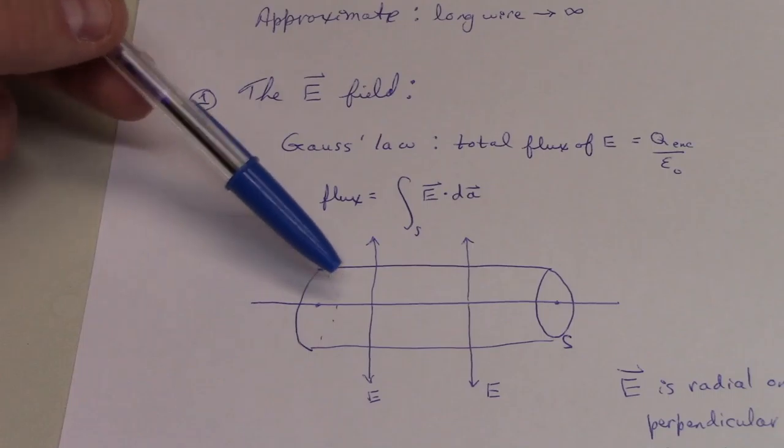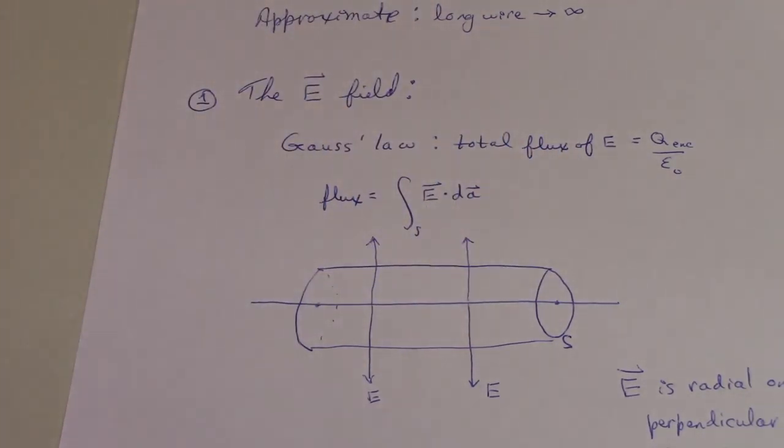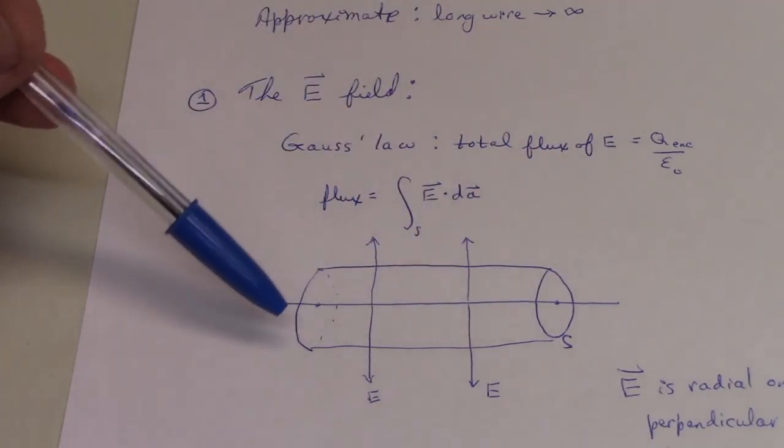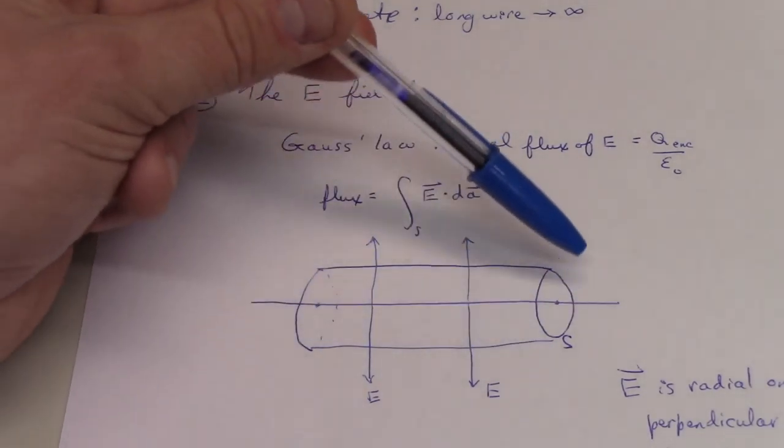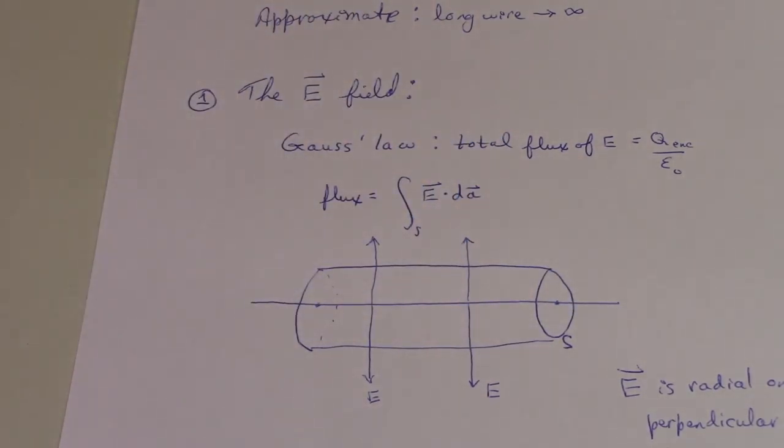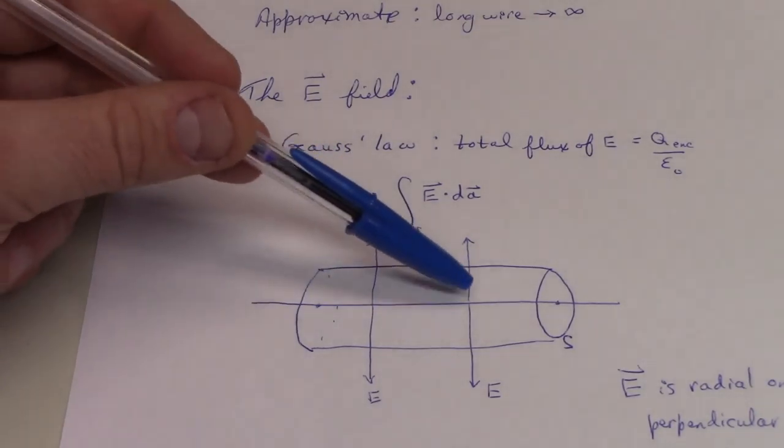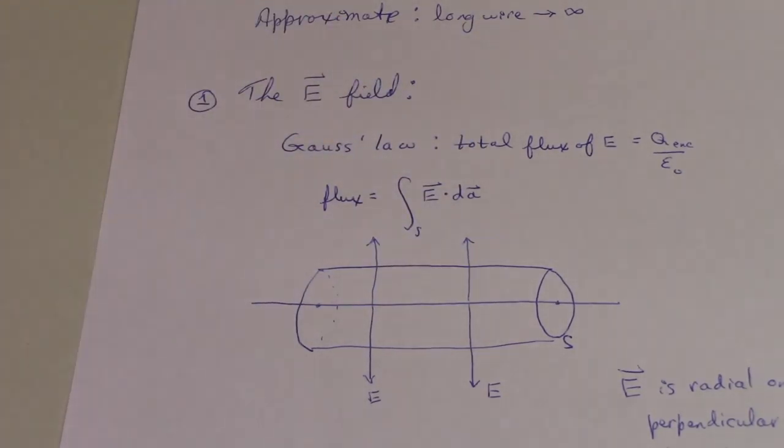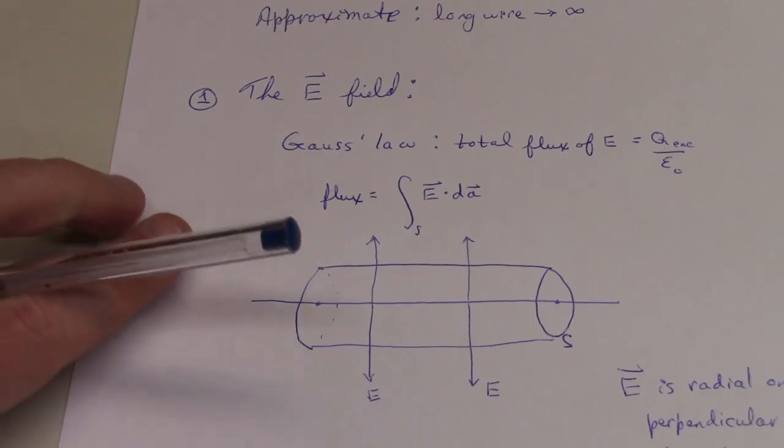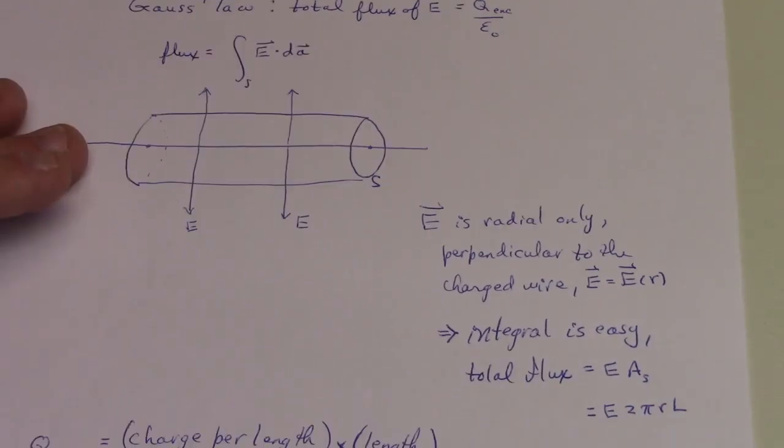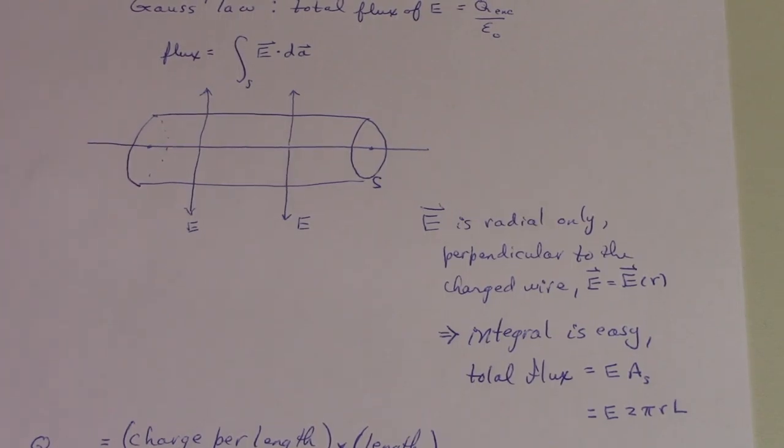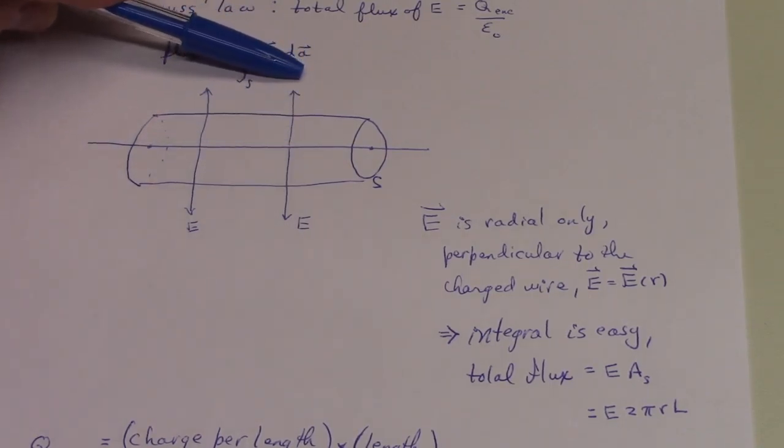Here is a piece of wire that I've drawn, and a Gaussian surface, which is just an imaginary cylinder around that wire. You could think of it as a pill bottle. We know that if this wire is charged, the electric field will be radially outward if this is a positive charge. The electric field by symmetry is radial only, perpendicular to the charged wire, and will be a function of distance r from that wire.